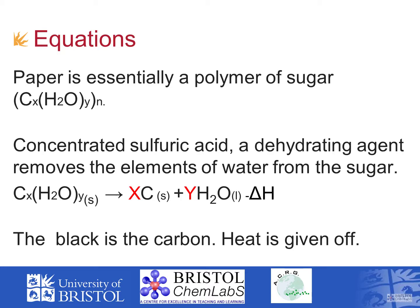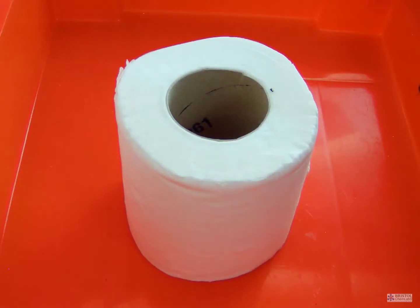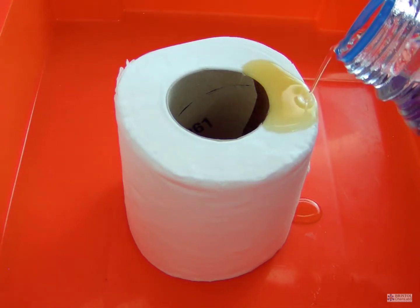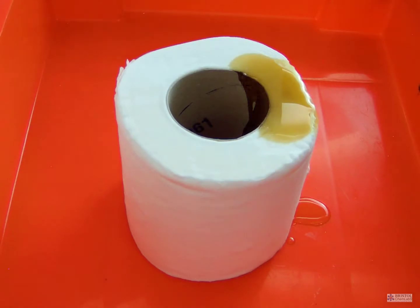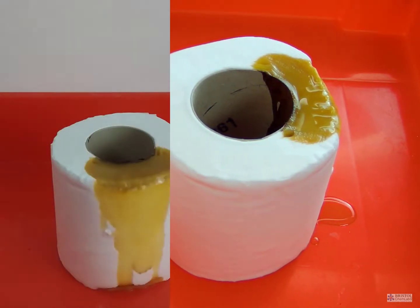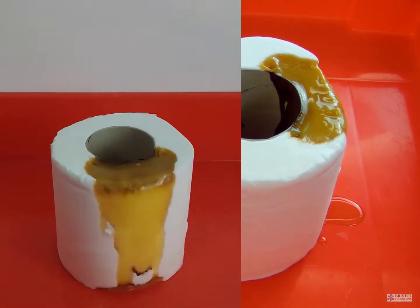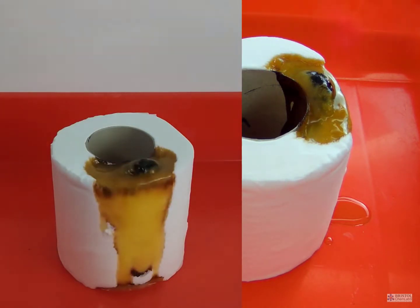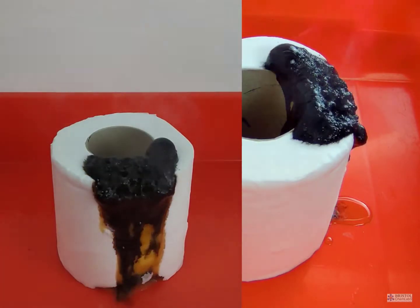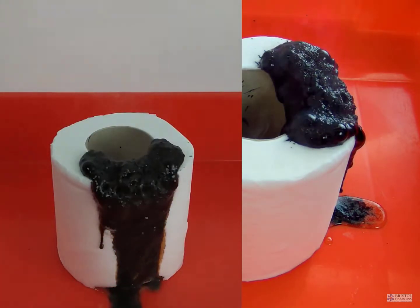Concentrated sulfuric acid is a dehydrating agent and therefore will remove the elements of water — that is two hydrogens and an oxygen — from molecules. Paper is mainly cellulose, which is carbon, hydrogen, and oxygen in the ratio of two to one. The removal of the water H₂O would simply leave behind the black residue of carbon.